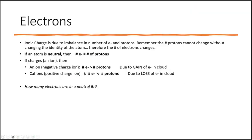Ionic charge is due to an imbalance in the number of electrons and protons. Remember, the protons can't change without changing the identity of the atom, so the number of electrons changes. If an atom is neutral, the number of electrons equals the number of protons. If I have eight protons and eight electrons, eight minus eight is zero — so it's neutral.